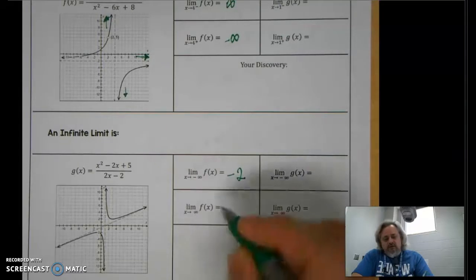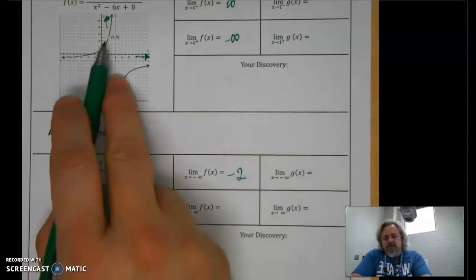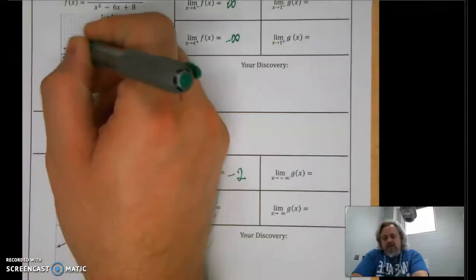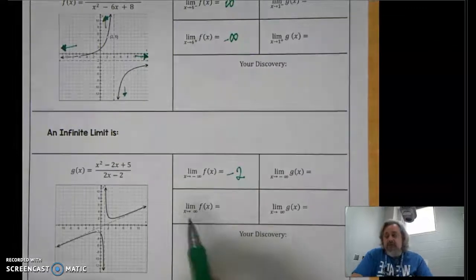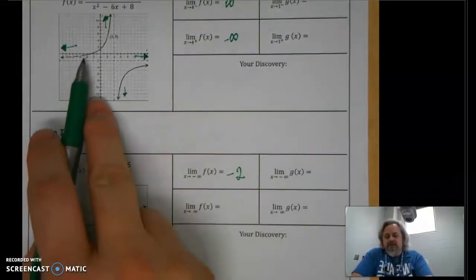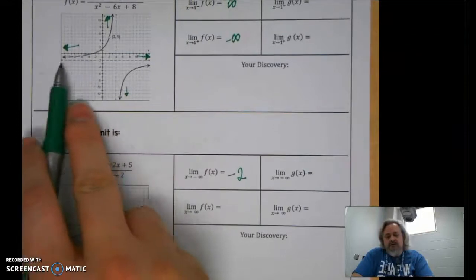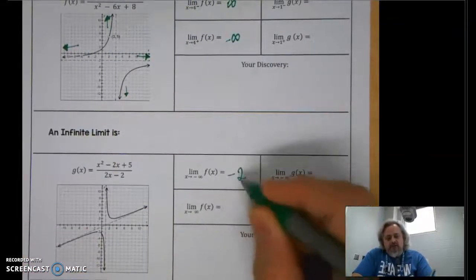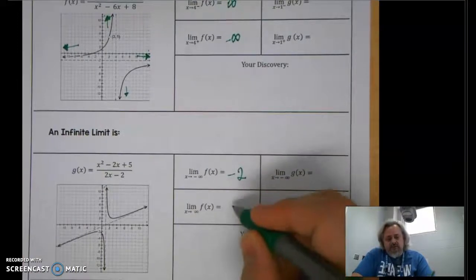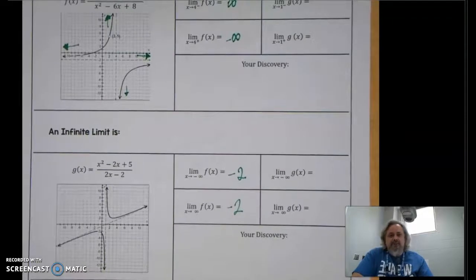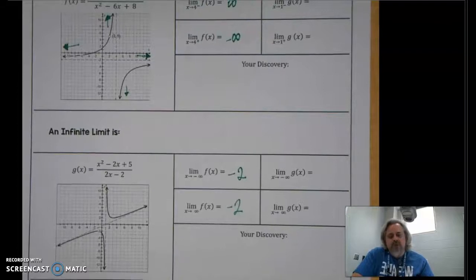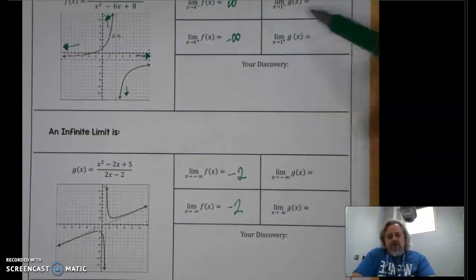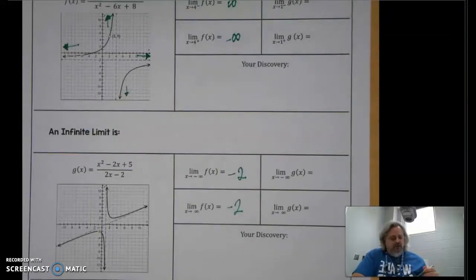As X goes toward negative infinity — going left forever — it still approaches that horizontal asymptote. So negative two is correct for both: the limit is negative two as X approaches negative infinity, and negative two as X approaches positive infinity. I just misread the sign initially but didn't actually get it wrong.